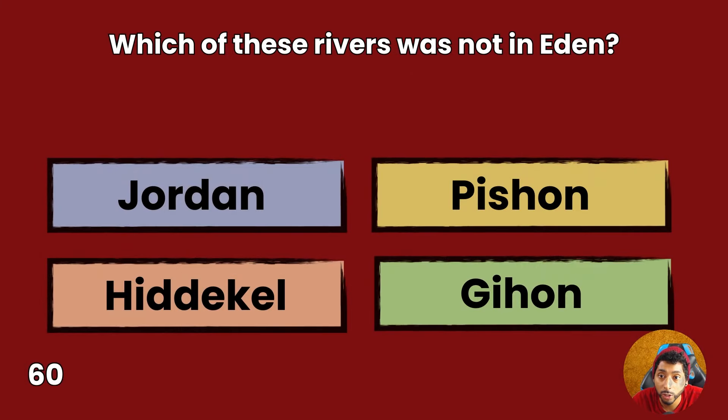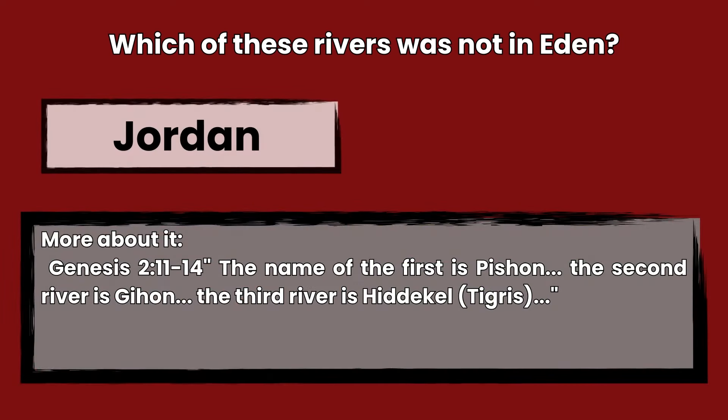Question 60: Which of these rivers was not in Eden? Jordan, Pishon, Hidekel, or Gihon? Answer: Jordan. Genesis 2:11,14 — The name of the first is Pishon, the second river is Gihon, the third river is Hidekel (Tigris). Jordan was not among the rivers of Eden.